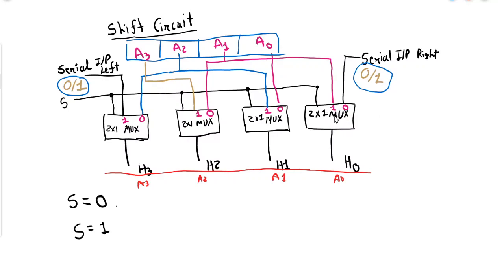Input number zero of the first multiplexer is serial input from the right side — it can be zero or one since serial data input can be anything. Input number one is from A1. The next multiplexer has input zero from A0 and input one from A2. The next has input zero from A1 and input one from A3. The last multiplexer has input zero from A2 and input one as serial input from the left side, which can also be zero or one.